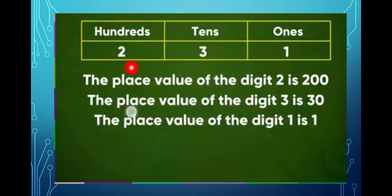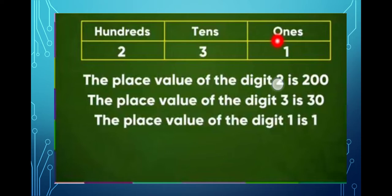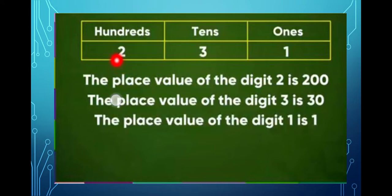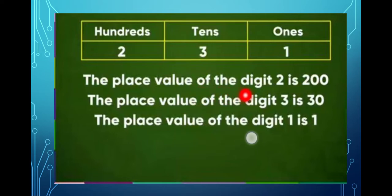Now let me give you some examples. Suppose, for example, the number 231. In 231, one is in the ones place, three is in the tens place, and two is in the hundreds place.